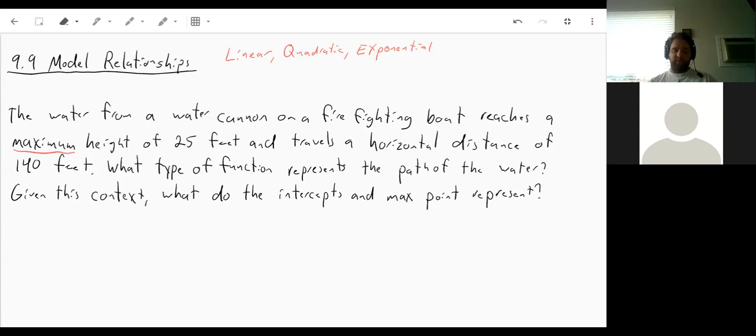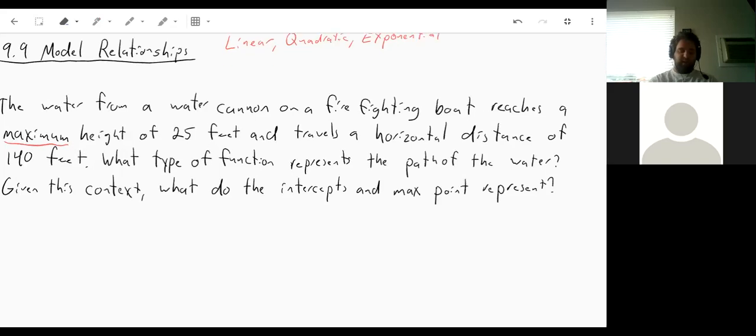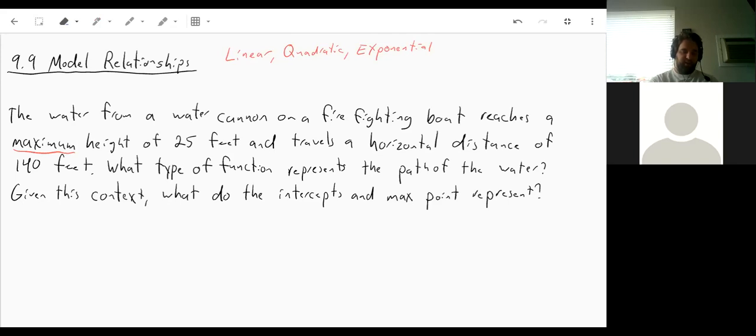So it has a maximum height of 25 feet and travels a horizontal distance of 140 feet. What type of function represents the path? We know the type of function would be a quadratic. Helps if I'm not writing with an eraser. Quadratic. Given this context, what do the intercepts and the maximum point represent?